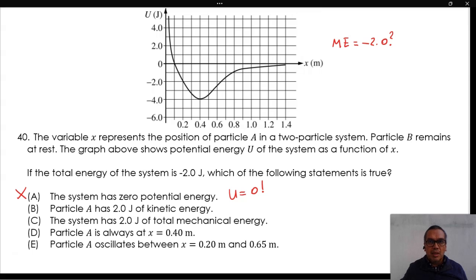B. Particle A has 2.0 joules of kinetic energy. If the position of particle A is changing, as the graph suggests, the potential energy is going to vary.